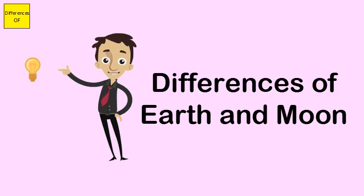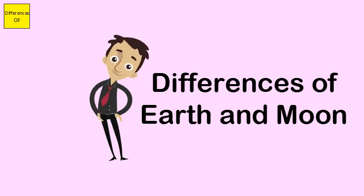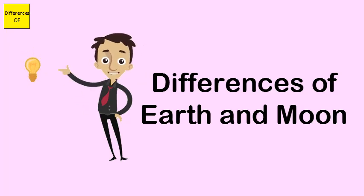Earth is visible throughout the day. Moon is visible mostly during the night. Earth is larger in size. Moon is smaller in size.